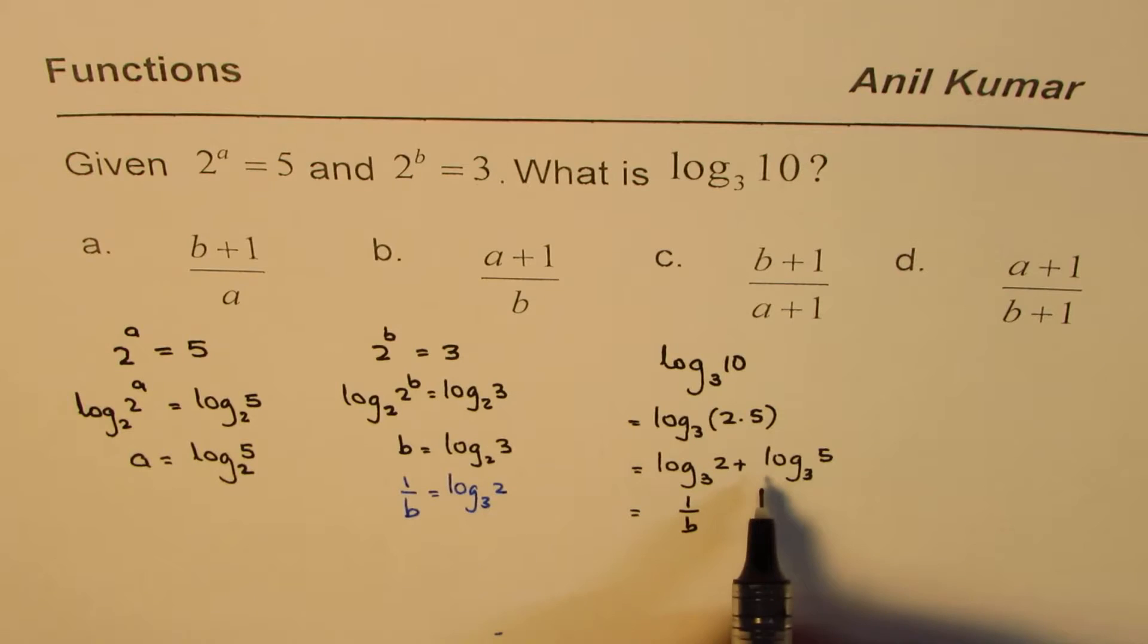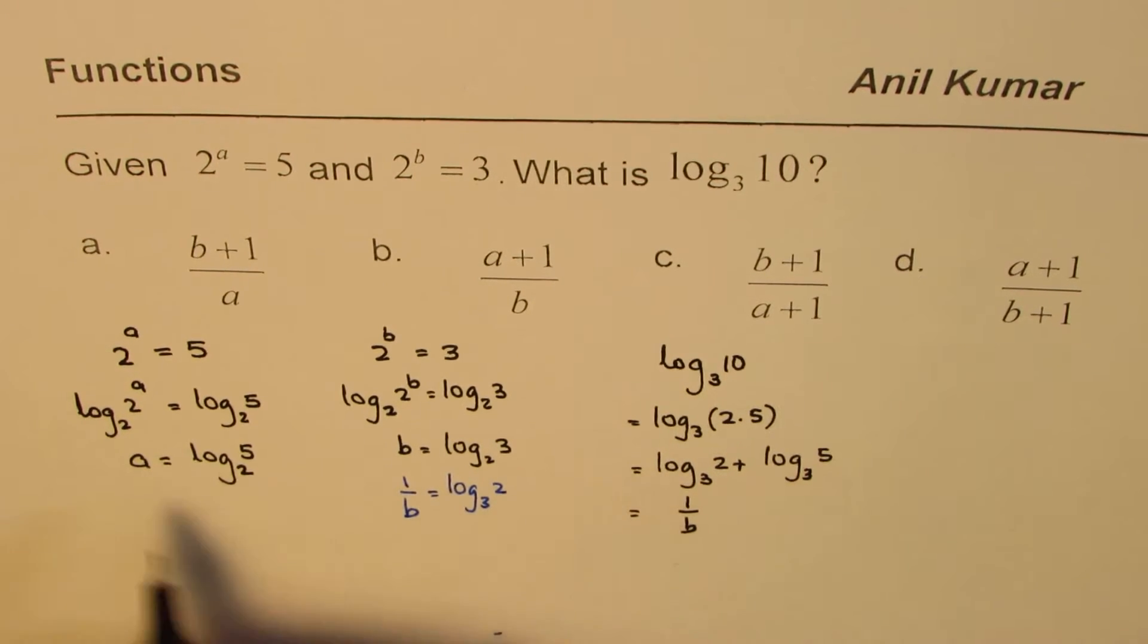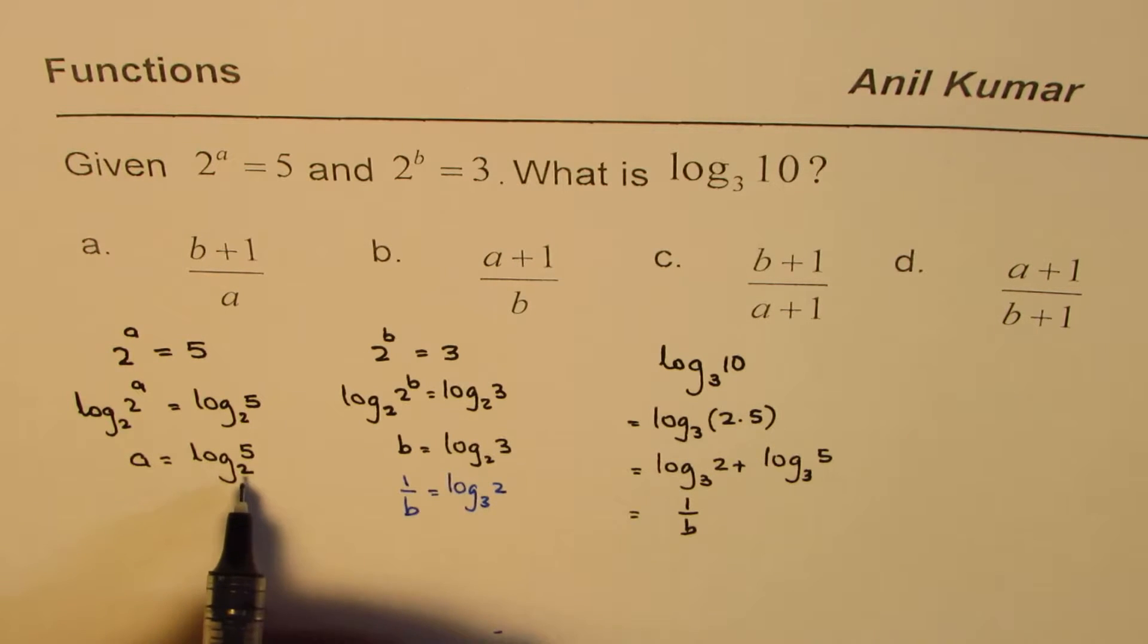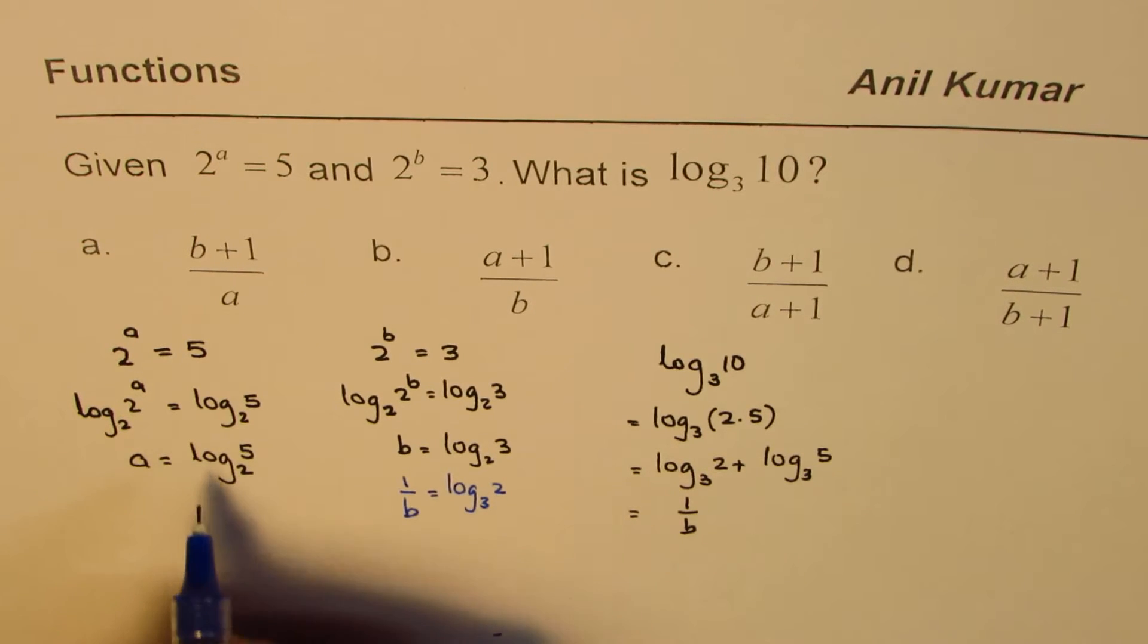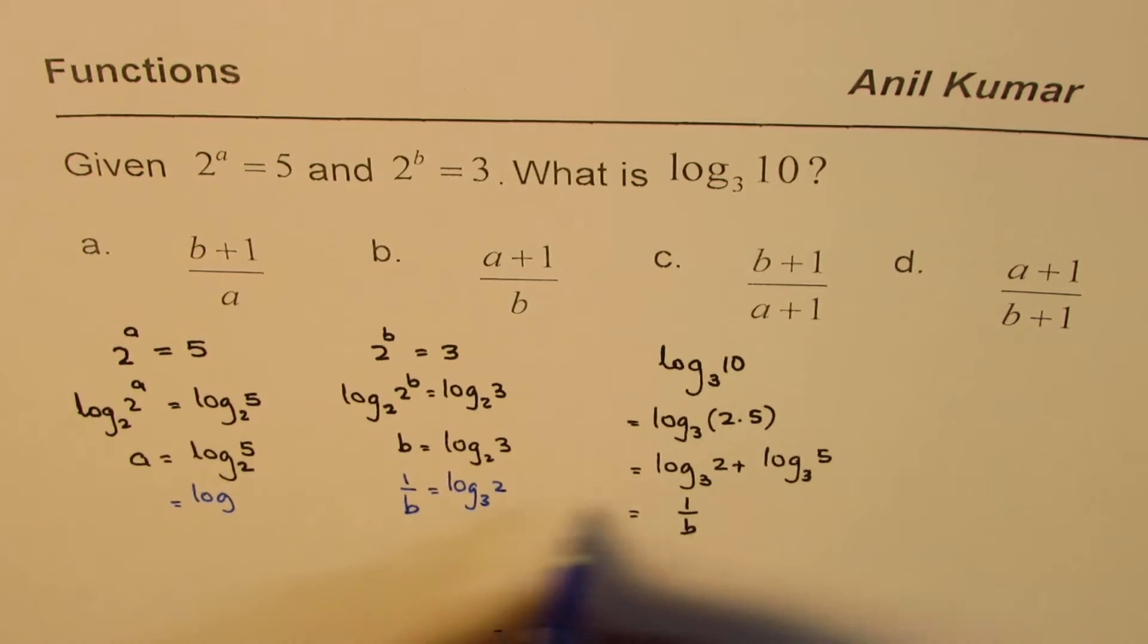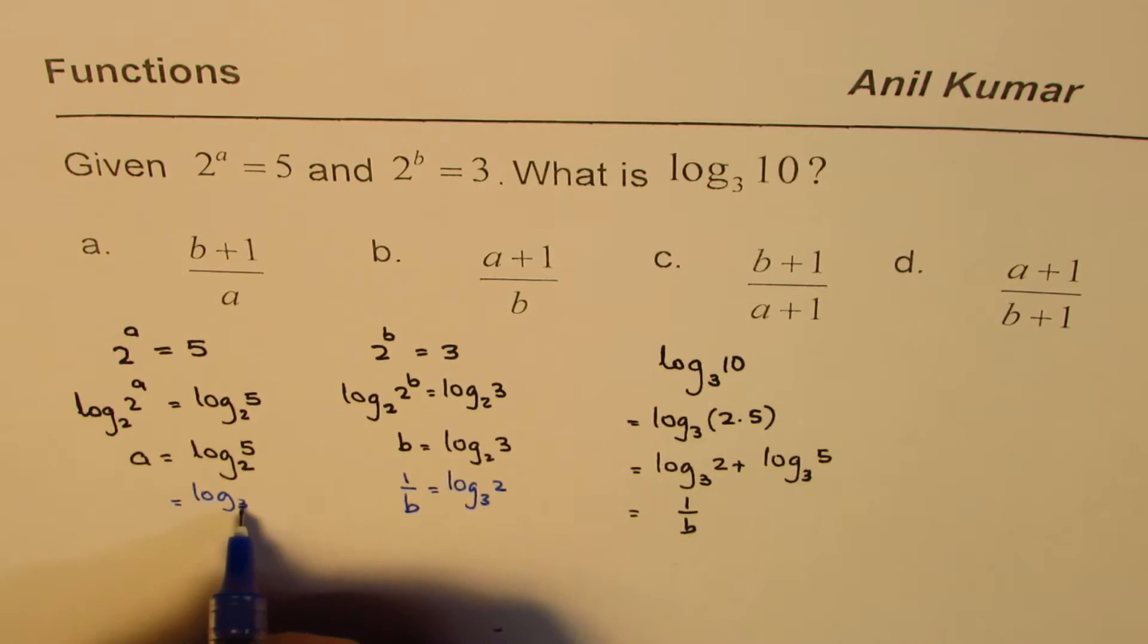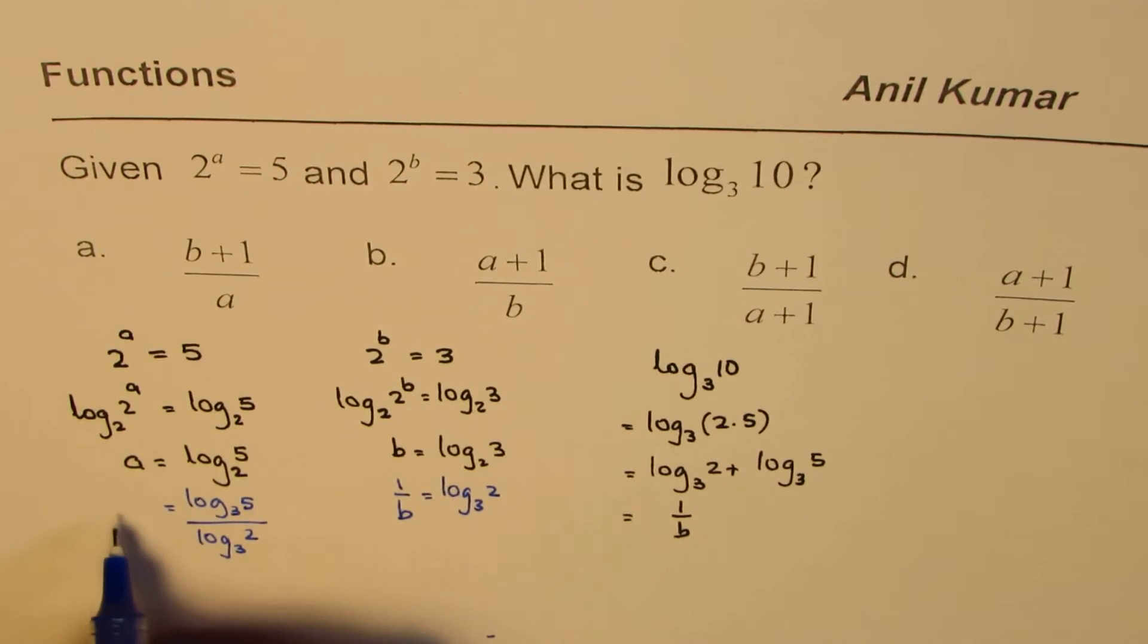Now how to write log to the base 3 of 5? We know a is log to the base 2 of 5. We can change this base. So let's change this base. We could write this as log to the base 3 of 5 divided by log to the base 3 of 2. And this is equal to a for us.